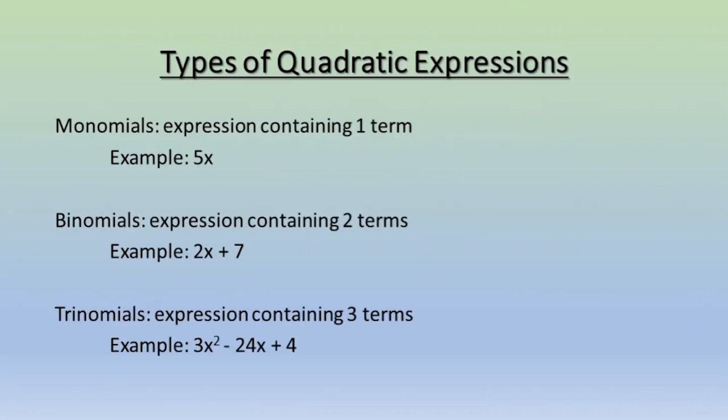To start, we want to look at the different types that there are. There are certain key pieces that you want to look at when determining whether you're dealing with a monomial, a binomial, or a trinomial. There's actually part of the word that will help you determine what you're dealing with. In monomial we have mono, in binomial we have bi, and in trinomial we have tri. Whenever we hear mono we think of one. So a monomial is an expression that contains just one term. An example of this could be something like 5x.